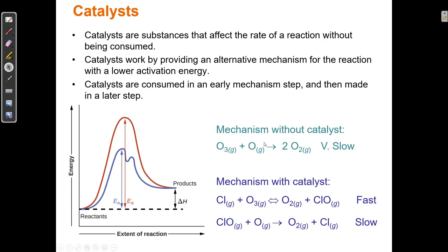Here's a mechanism without a catalyst: O3 plus O makes 2 O2. It's very, very slow. For an ozone particle to react with an oxygen atom in the upper atmosphere to create two oxygen molecules is very, very slow. This is the reaction coordinate diagram that shows that. Remember, the rate of a reaction is a function of its activation energy, so if it's very slow, that means it has a very, very high activation energy.